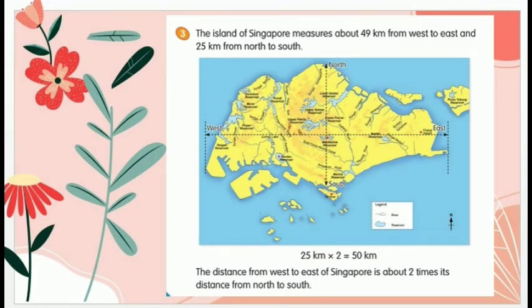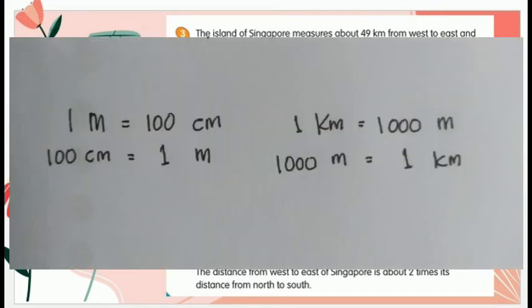Teman-teman sudah paham materi cara mengganti dari sentimeter menuju meter atau sebaliknya, dan juga memahami jarak kilometer karena kilometer ke meter ada 1000 meter dan sebaliknya. Rumusnya: 1 meter sama dengan 100 sentimeter, 100 sentimeter sama dengan 1 meter, 1 kilometer sama dengan 1000 meter, dan 1000 meter sama dengan 1 kilometer. Dihafalkan ya!